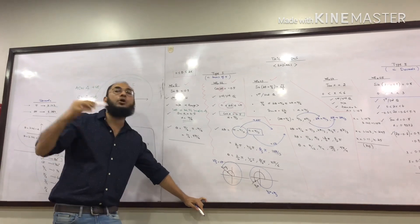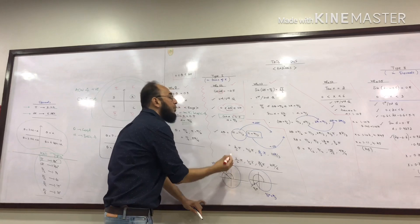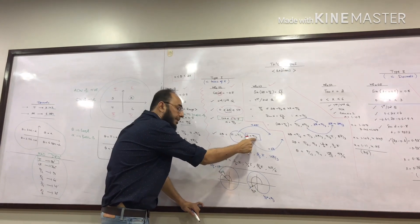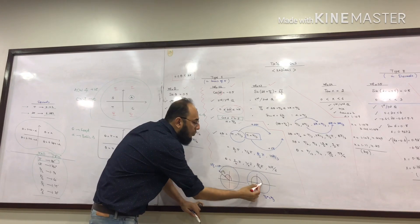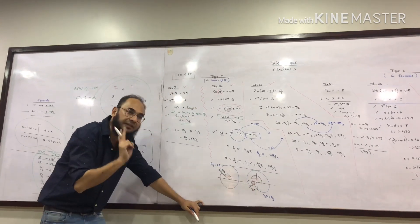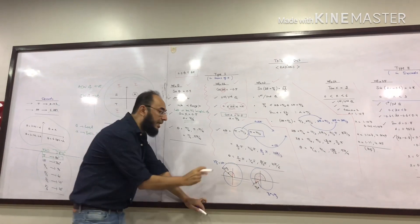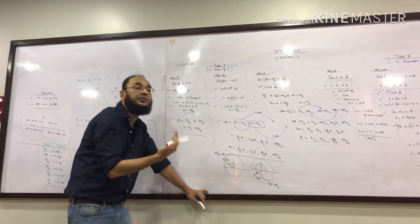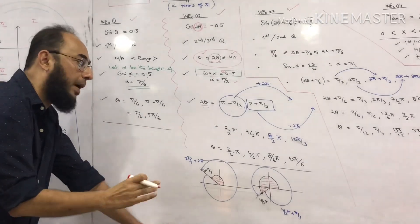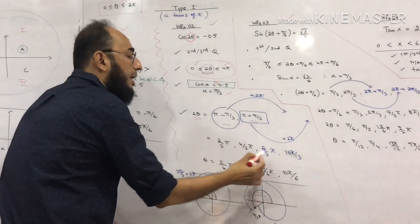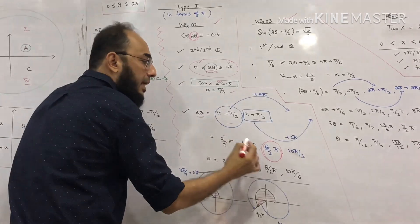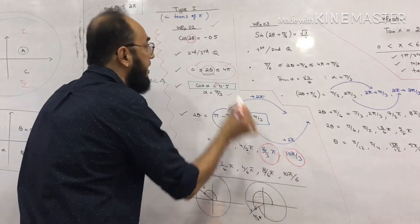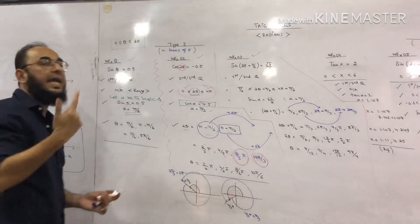Between 0 and 2pi there are two answers, but because a new revolution has been added via range modification, two additional answers also come. Second quadrant: pi minus basic angle. Third quadrant: pi plus basic angle. For the extra revolution, add 2pi to each of the first two answers. Dividing through gives four final answers for theta in this example.